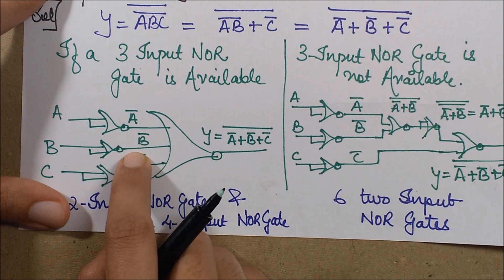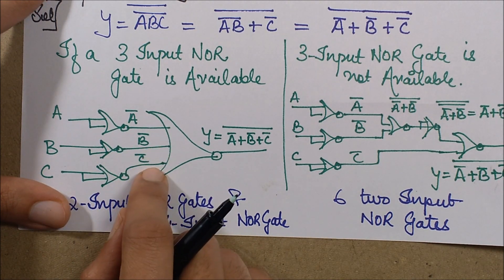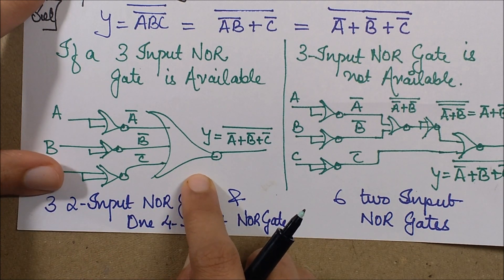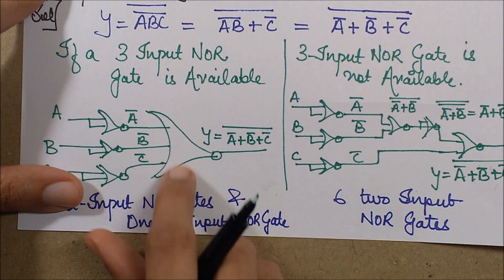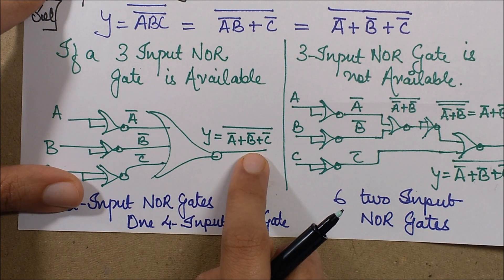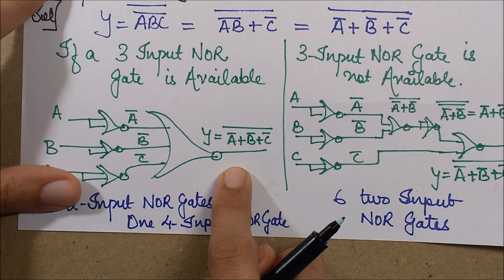Similarly, this will yield B bar, this will yield C bar. And when I input these three things into this three-input NOR gate, what I will get is this final expression. So Y equals ABC is the final expression.